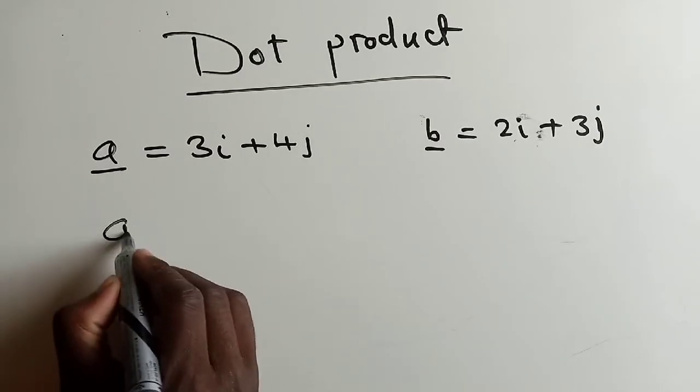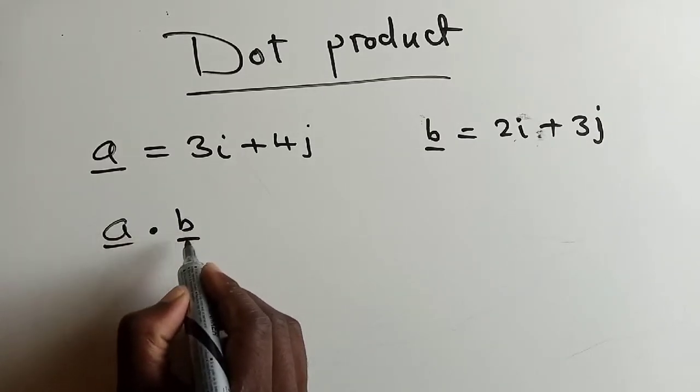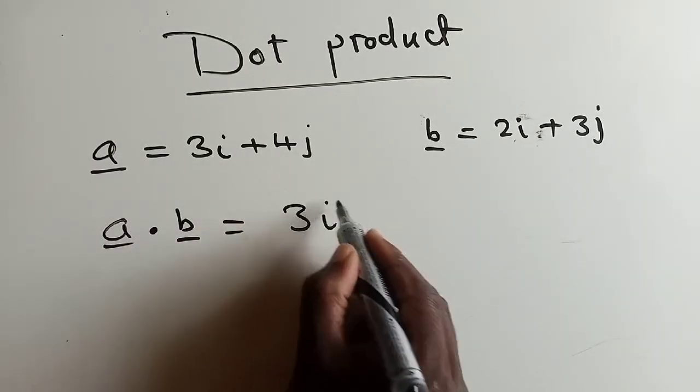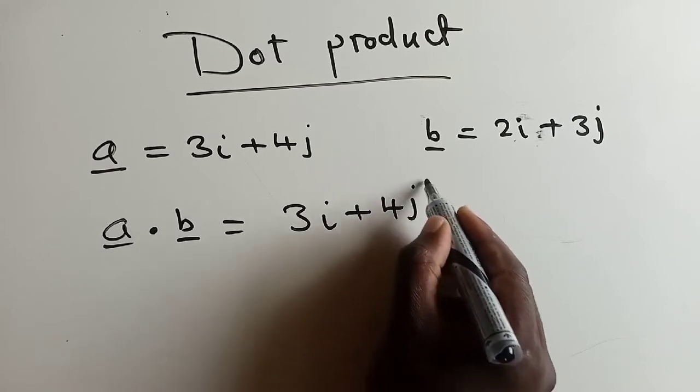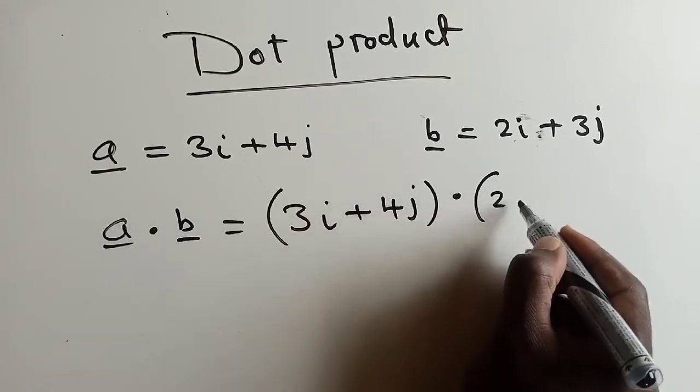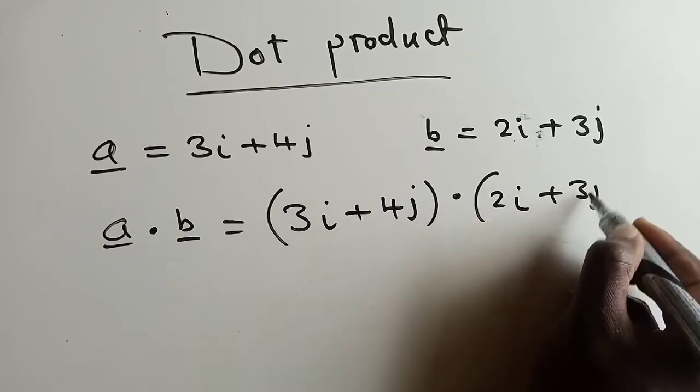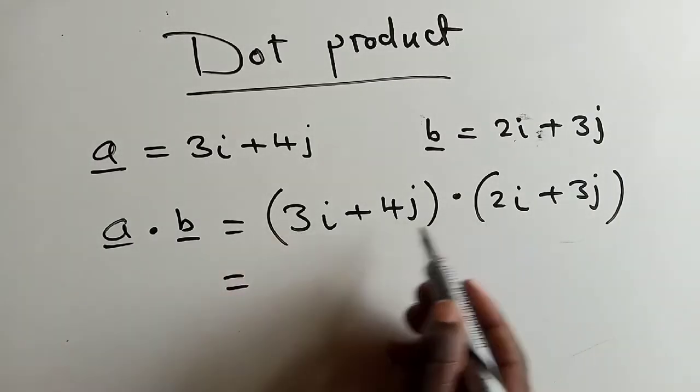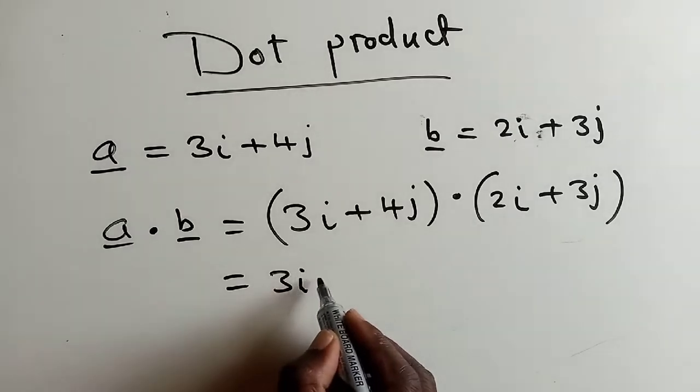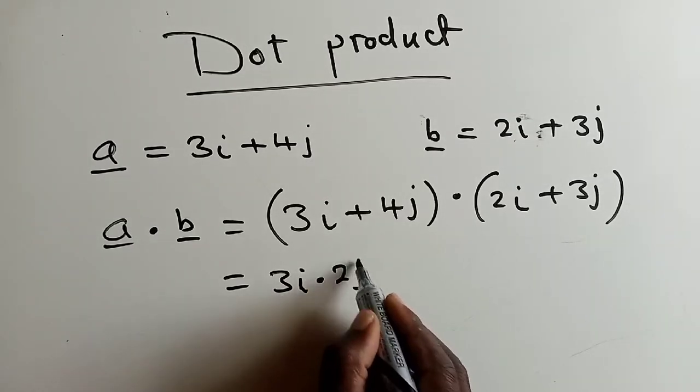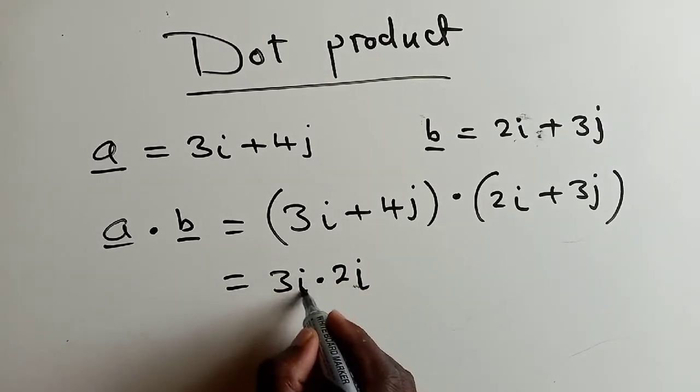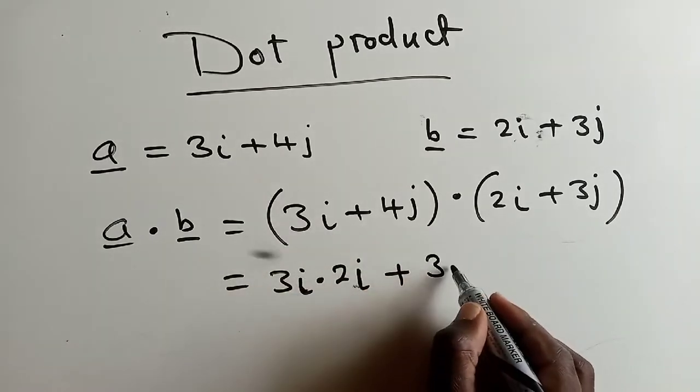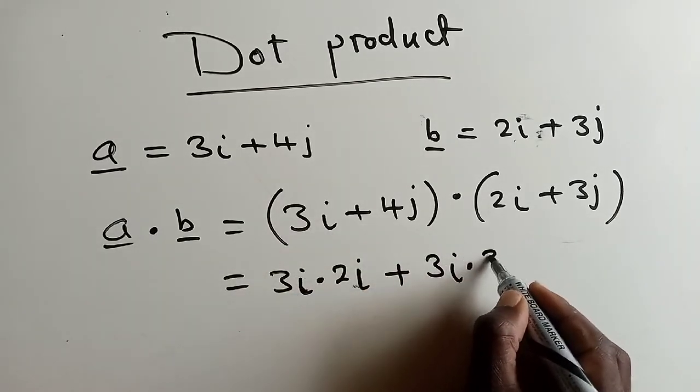So you get your vector A and vector B. You multiply them. So this is how it works. Copy your A and a dot there. Copy your vector B, which is over here. And then, you start multiplying. This by this, it will give us 3I multiplied by 2I. This is 3I multiplied by 2I plus 3I multiplied by 3J.